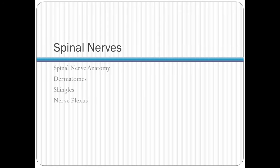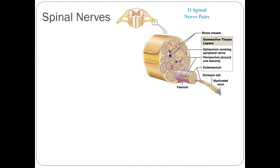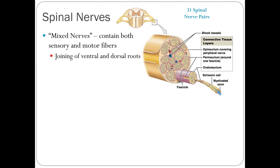There are 31 spinal nerve pairs, classified by region: cervical, thoracic, lumbar, sacral, and coccygeal. These are mixed nerves formed by the joining of the ventral and dorsal roots, containing both sensory and motor fibers.